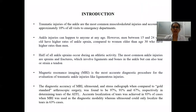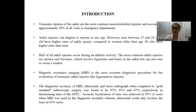Coming to introduction, traumatic injuries at the ankle are most common in musculoskeletal injuries and account for approximately 10% of all visits to the emergency department. Ankle injuries can happen to anyone at any age, most commonly between 15 to 24 years old, and have higher rates of ankle sprain compared to women older than 30 years, who have higher rates than men. Half of all ankle sprains occur during an athletic activity. The most common ankle injuries are sprains and fractures, which involve ligaments and bones in the ankle, but can also tear or sprain the tailbone.